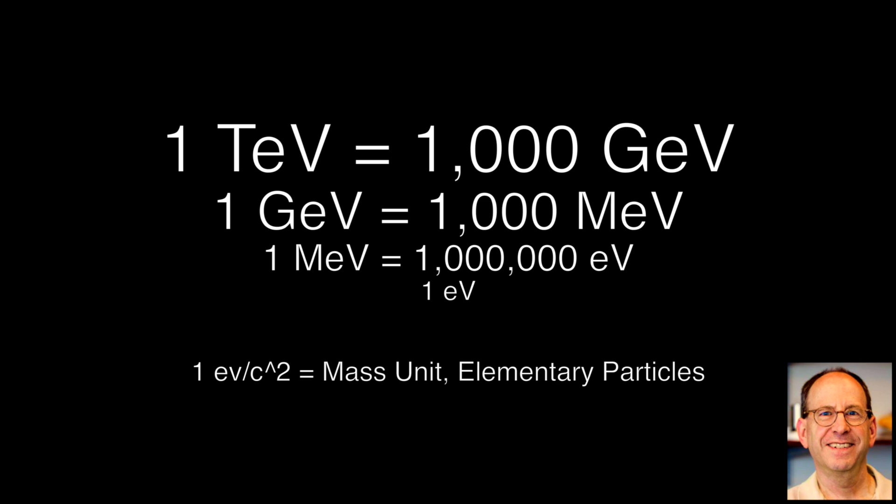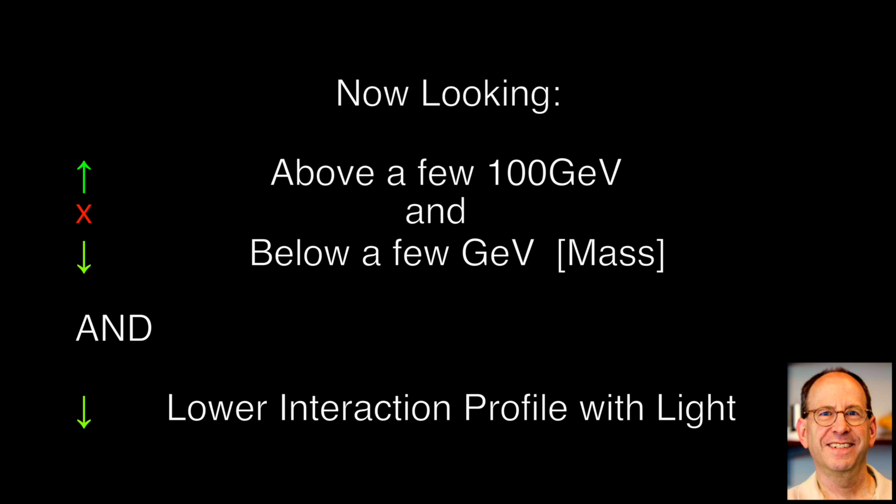And the couplings we're looking at, the interaction strength, are now weaker than the W in WIMP, distinctly weaker than the standard weak interaction. So it's edging outside the original motivation, but that motivation can be stretched a little bit. So it's not ruled out yet.